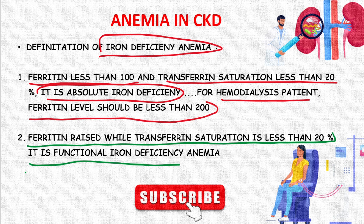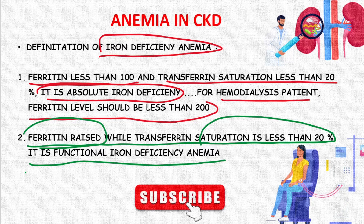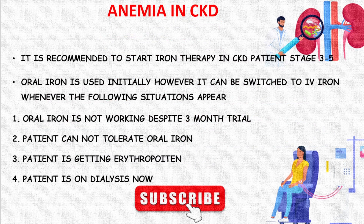This second type is called functional iron deficiency anemia. It is usually caused by hepcidin, which is released in chronic conditions and prevents the body from using stored ferritin. So ferritin will be high while transferrin saturation will be low.